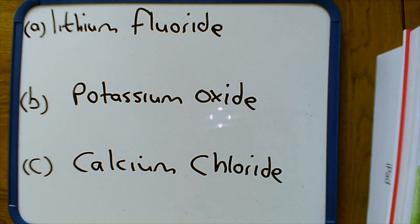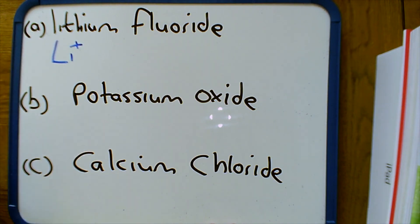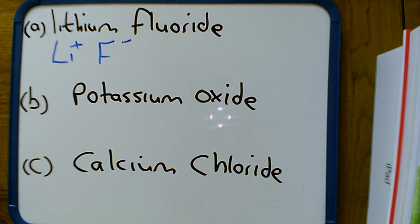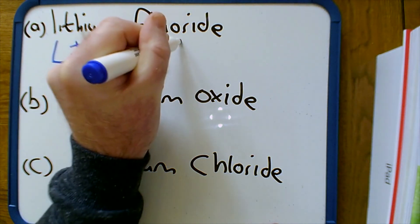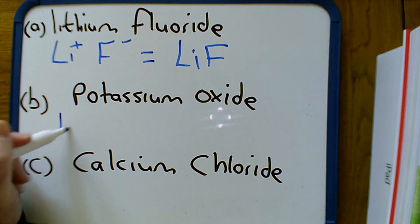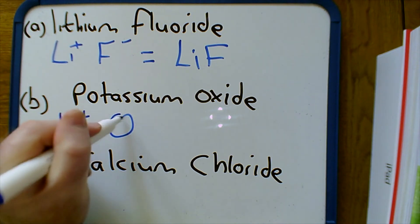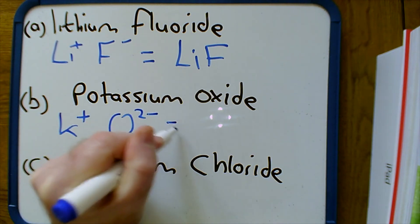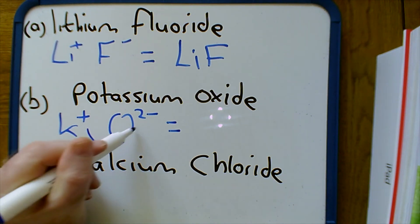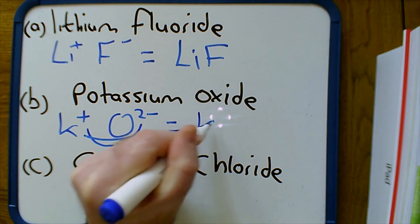For question A, lithium fluoride is made up of Li+ and F−. The same unit of charge on both ions — they cancel out — and the formula is LiF. For question B, potassium oxide: potassium is K+ and the oxide ion is O2−. We need two K+ to cancel out the O2−, and the formula is K2O.